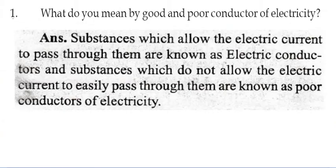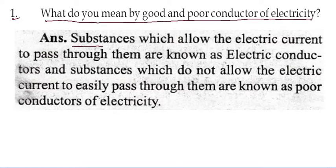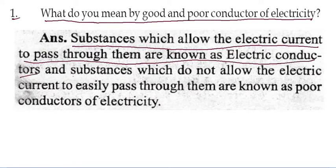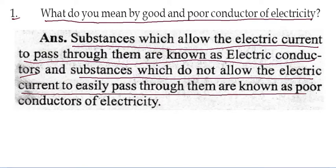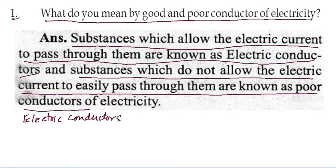The first question: what do you mean by a good and poor conductor of electricity? Substances which allow the electric current to pass through them are known as electric conductors. Examples of good conductors are copper, iron, aluminum, and gold.